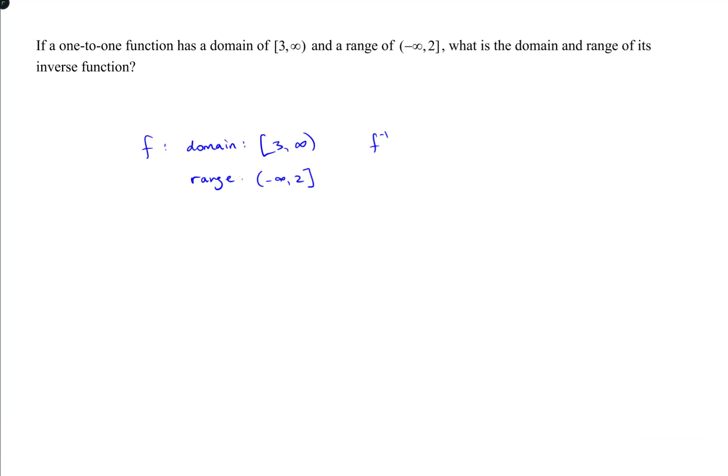As long as this is a one-to-one function and it was stated that it is, you're going to have an inverse whose domain is negative infinity to 2 and whose range is from 3 to infinity because you're literally just swapping the domain and the range when you're defining inverses.